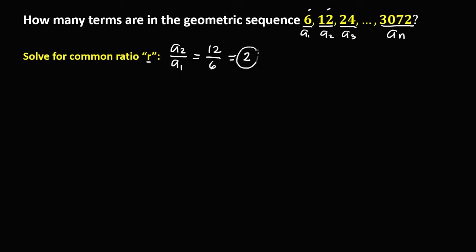To solve for the number of terms in this geometric sequence, we use the formula: aₙ = a₁ × r^(n-1).